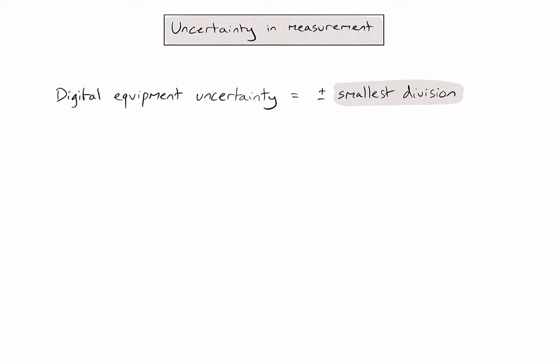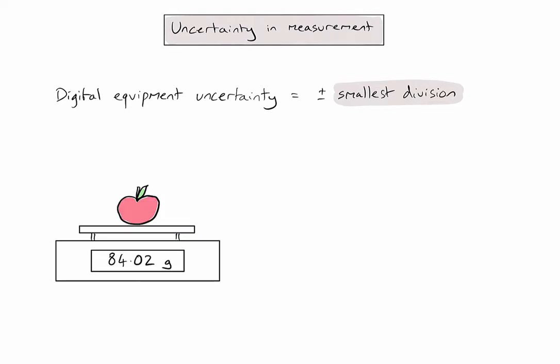Let's take an example of a digital balance. So because we can't estimate beyond that final decimal place, my measurement is simply going to be the number that's shown on the scale. And following the convention given above, we're going to put plus or minus the smallest division or the smallest measurement I can make, which would be 0.01 grams.